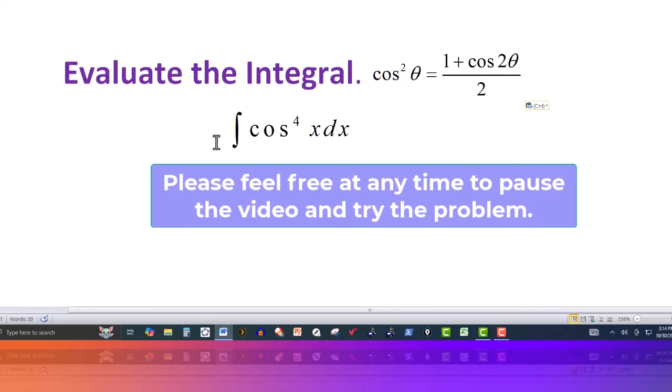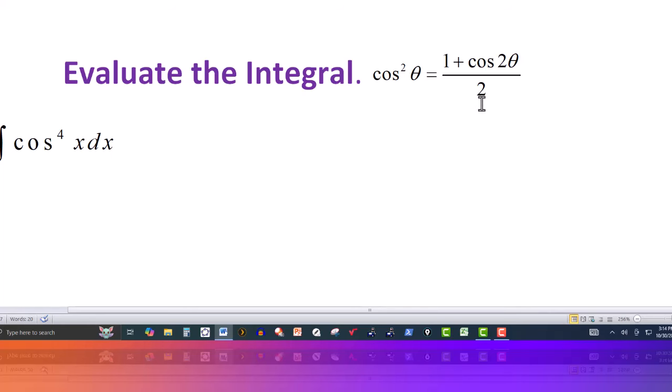So we'll be using this formula right here. It tells me if I have the cosine squared of any angle, it's going to equal one plus cosine of twice that angle over two. Comes from your double angle and half angle identities. So with this formula we can reduce the power. It allows you to reduce the power from two to the power of one.